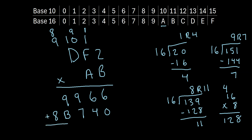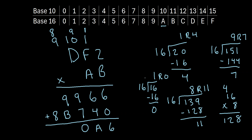Our final answer comes from adding the two rows together. 6 plus 0 is 6. 6 plus 4 is 10, which in hexadecimal is A. 9 plus 7 is 16, so 1 remainder 0 — we write 0 and carry the 1. Then 1 plus 9 plus B: 1 plus 9 is 10, B is 11, so 10 plus 11 is 21. How many 16s go into 21? Just 1, with a remainder of 5. We write 5 and carry the 1. Finally, 1 plus 8 is 9. So DF2 times AB equals 950A6.